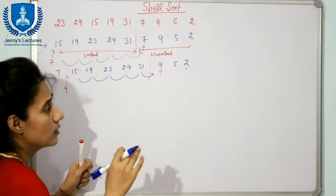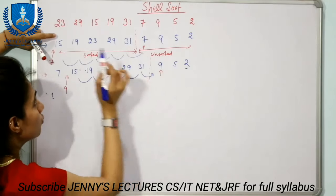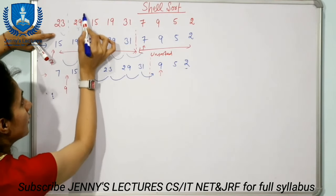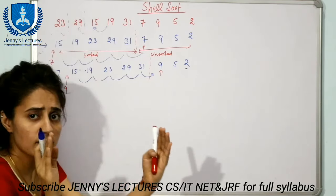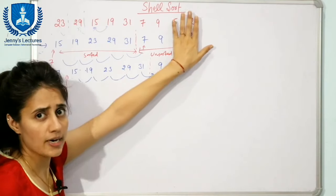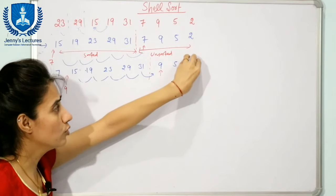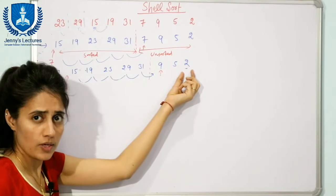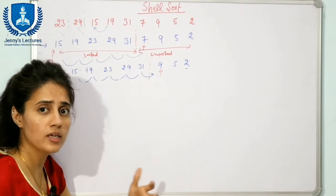The problem with insertion sort is that it only compares adjacent or near elements. If a smaller element is at the right side of the array and needs to go to the leftmost side, many shift operations are required. This is the main disadvantage: bringing the smallest element to the left-hand side takes many comparison and shift operations.